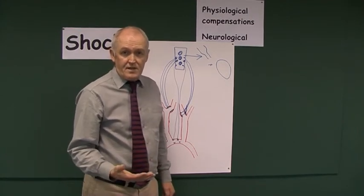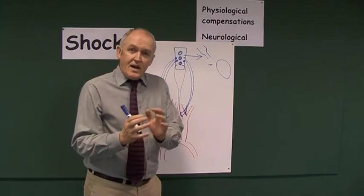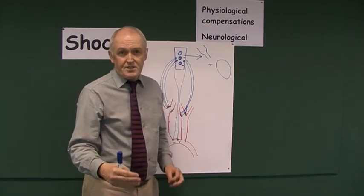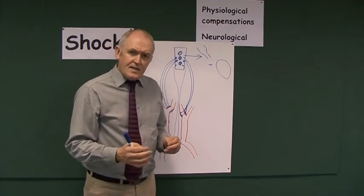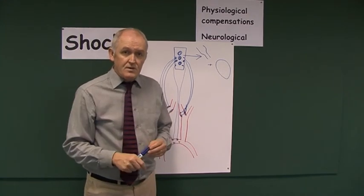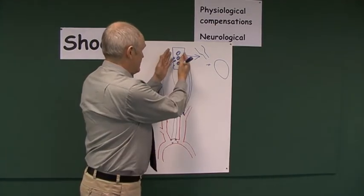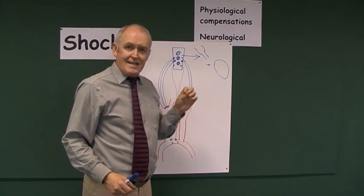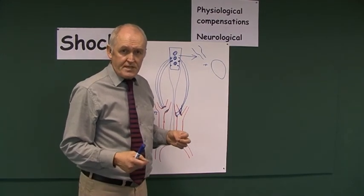The adrenal medulla is stimulated to produce the catecholamines — adrenaline and noradrenaline, or epinephrine and norepinephrine. The sympathetic outflow affects blood vessels and heart directly, but also causes more adrenaline and more renin. The renin stimulates the angiotensin system to increase blood pressure. The adrenaline and noradrenaline increase heart rate and cause peripheral vasoconstriction. This neurological compensation — based on baroreceptors, sensory nerves to the medulla oblongata, and increased sympathetic outflow — initiates the physiological compensatory mechanisms.